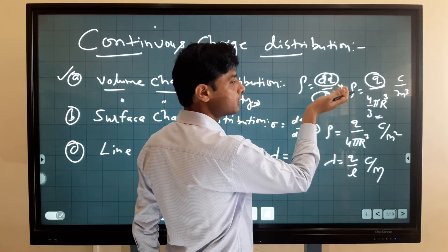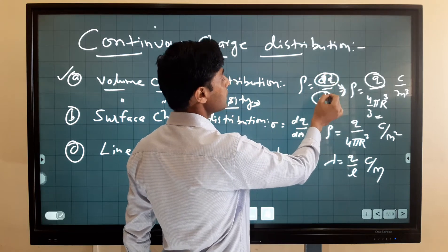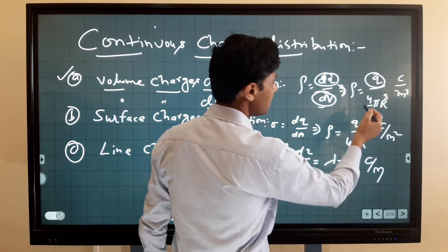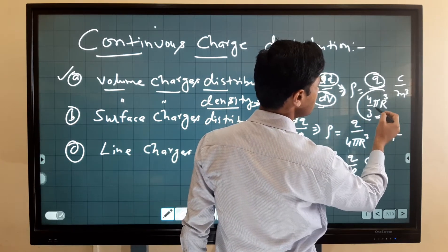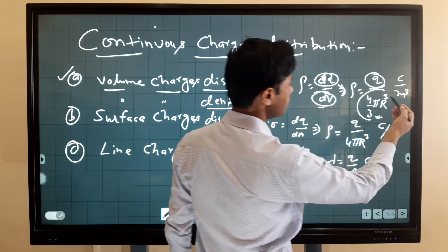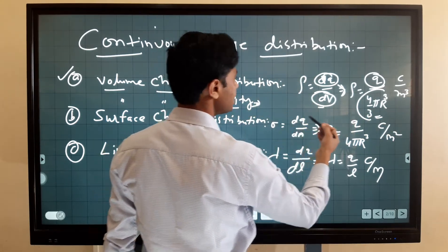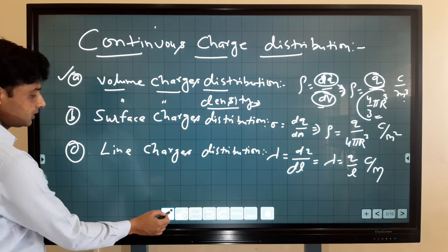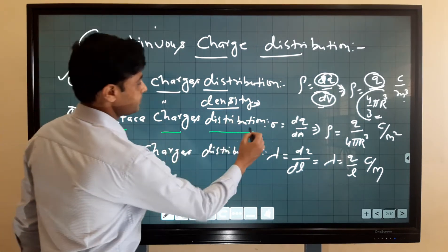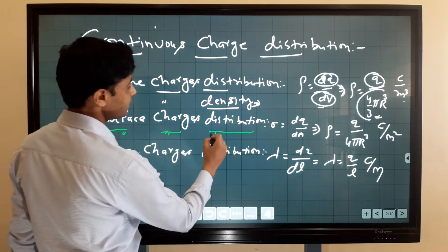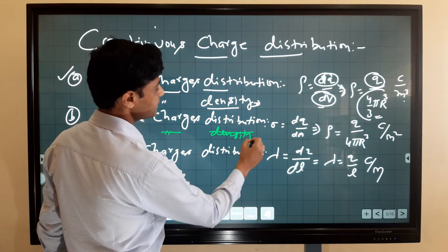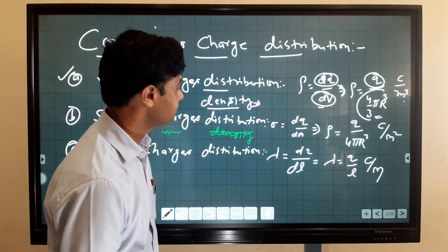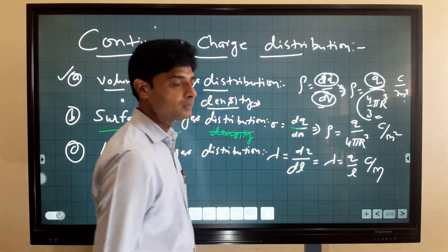Here, dq is the small point charge at a point in the volume. For a sphere, dq equals q and the volume of a sphere is 4/3 π r³. The unit of volume charge density is coulomb per meter cubed. The second type is surface charge distribution, also called surface charge density.